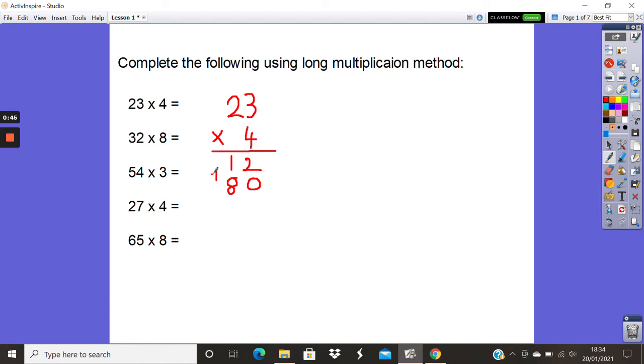And I'm going to add those two together to find my total. So 2 add 0 would be 2, 8 add 1 would be 9 so 23 times 4 would be 92.